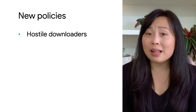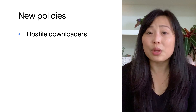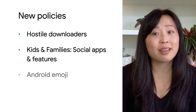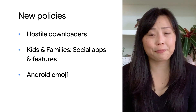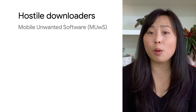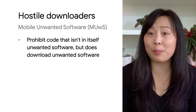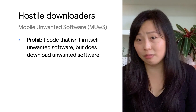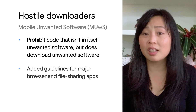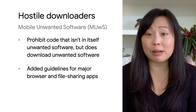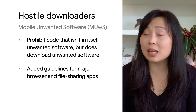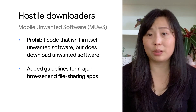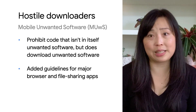Let's start with our new policies about hostile downloaders within the mobile unwanted software space, social apps and features for kids and families, and Android emojis. We're adding a hostile downloader section to our mobile unwanted software policy to prohibit code that by itself isn't unwanted software, but the code can download other mobile unwanted software. If you'd like guidelines for major browsing and file sharing apps that facilitate downloads, please take a look at our policy center. This change will help us build a safer and more trustworthy ecosystem for everyone.